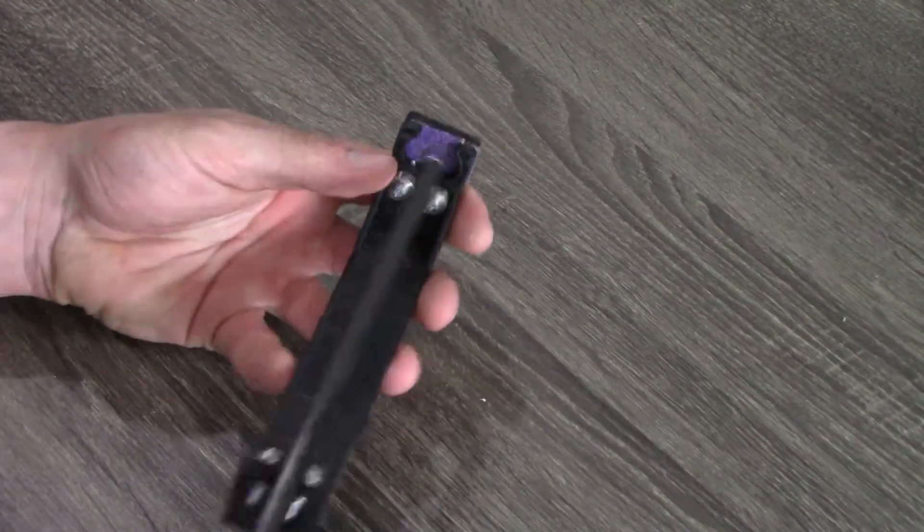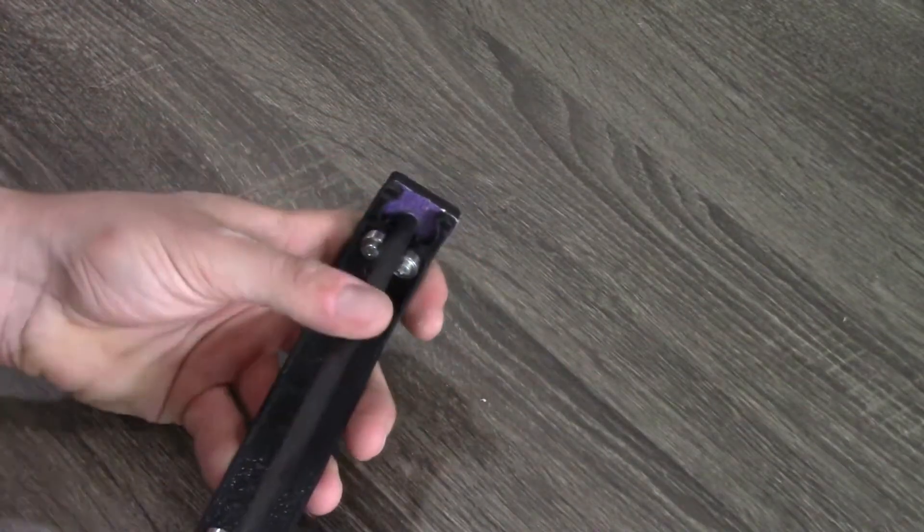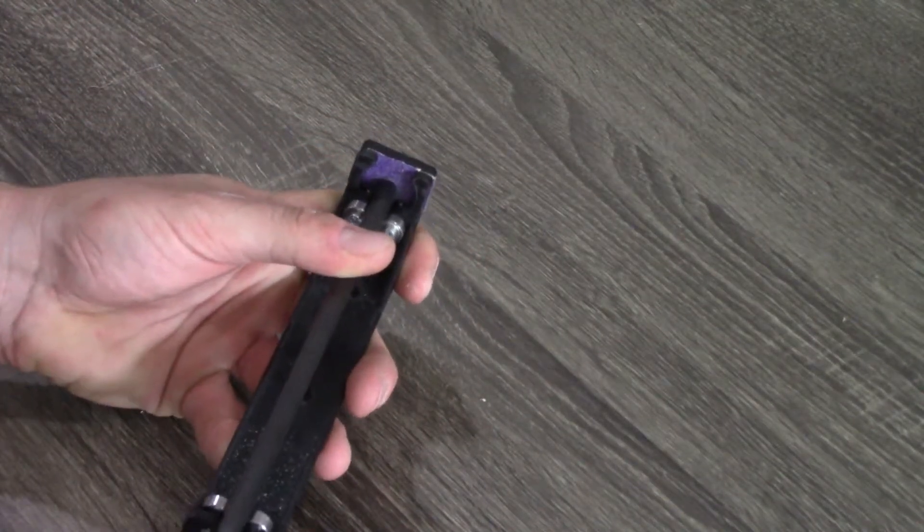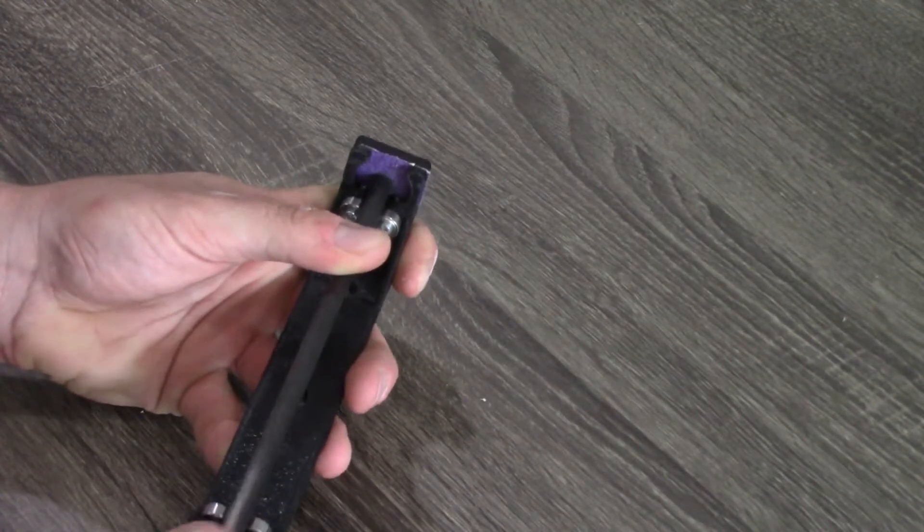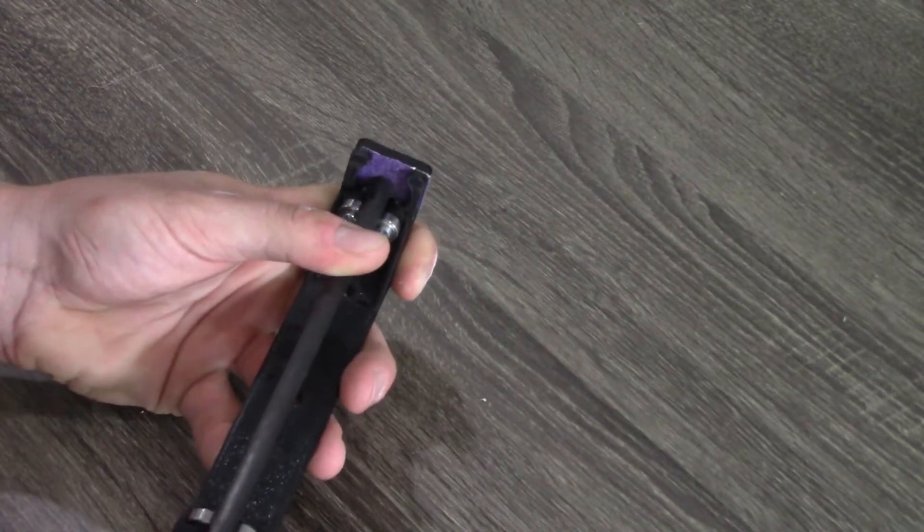I'm just going to put it in the arrow squaring device here, press it up against the sandpaper, and just rotate it several times. When there's no more silver sharpie on the end, I'll know the shaft is completely square.